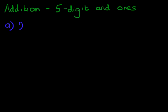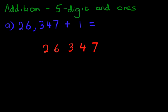What is 26,347 plus 1? Now that's a very straightforward one. But what we're going to do is, we're going to do this using the vertical format. So the first stage is to rewrite this question in columns. So let's do that over here. 26,347 plus 1.